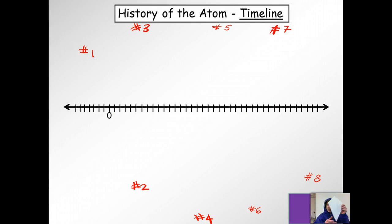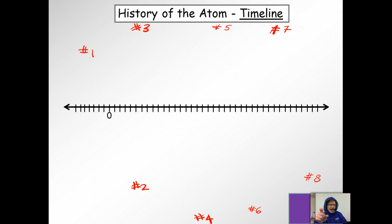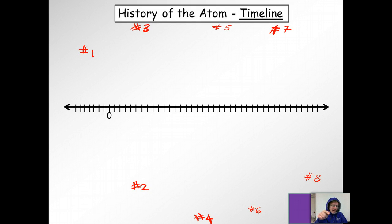On your piece of paper — so you've got this handout — you've got four columns: the scientists column, the year column, ideas, and then the atomic model. Put your name at the top, put the period. First column is the scientists. We're going to talk about eight scientists here.